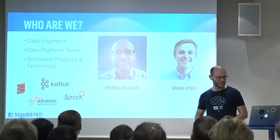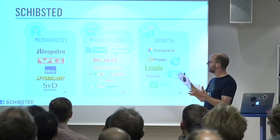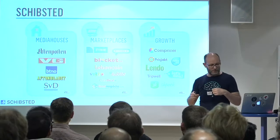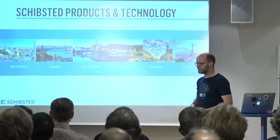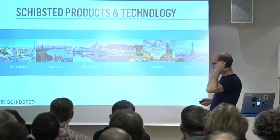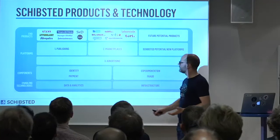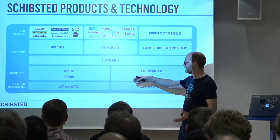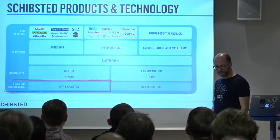We use Scala, Kafka, and Apache Spark for batch processing, and we run everything on Amazon Web Services. Schibsted consists primarily of three areas: media houses, marketplaces, and growth companies — the new up-and-coming ones. A couple of years ago, they realized they were building a lot of similar services across all these companies, so they started Schibsted Products and Technology, located in different hubs across Europe, building platforms and components for publishing, marketplaces, advertisements, identity, login, payment solutions, and messaging.